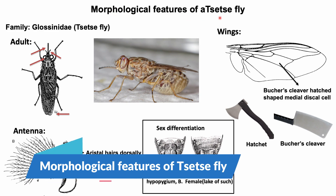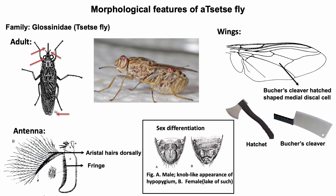Morphological features of a tsetse fly: tsetse flies are medium to large size, ranging 6 to 14 millimeters in length, excluding the length of the proboscis. They are tan or brown in color. The fly has a long and forwardly directed proboscis. The halter of the tsetse fly is also the size of the proboscis. Remember that the base of the halter is swollen.